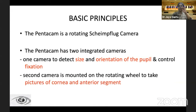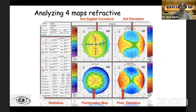The Pentacam has two integrated cameras. One camera detects the size and orientation of the pupil and controls fixation. The second camera is mounted on a rotating wheel to take pictures of the cornea and the anterior segment.